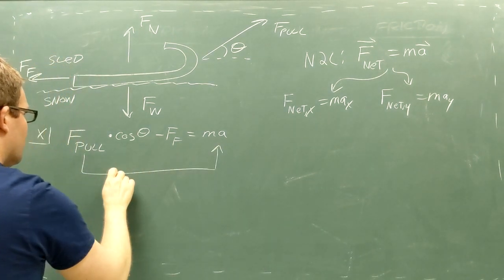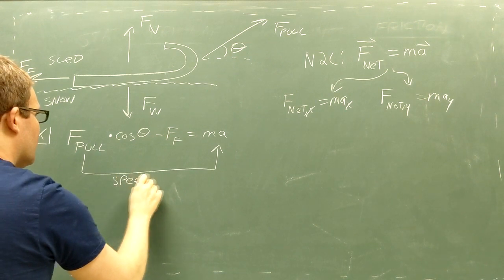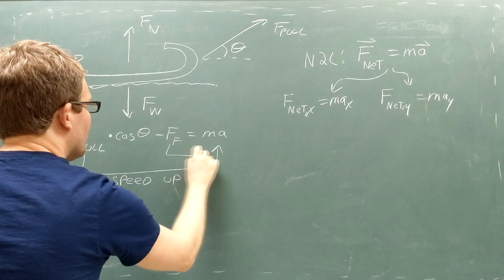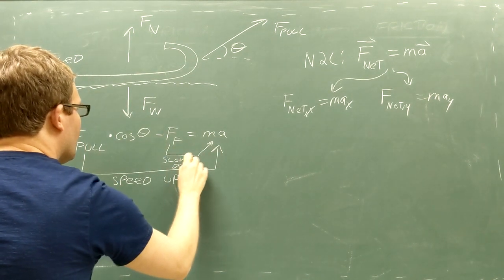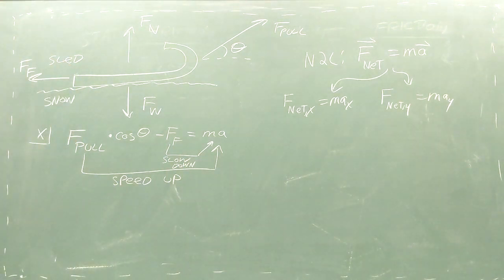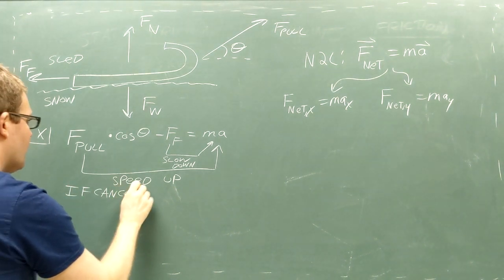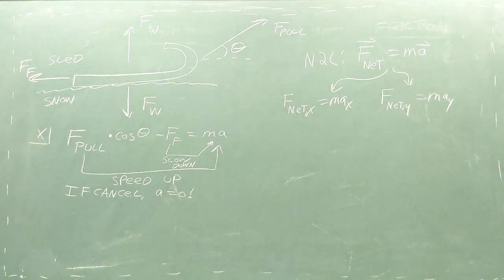This equation tells us that if your force has a strong enough x component, the sled will accelerate forward. However, if friction is stronger than your force's x component, the sled will slow down. There's also the third case where your force's x component exactly cancels friction and the sled moves at constant velocity. This is how most people usually pull a sled, as humans can't accelerate forever.